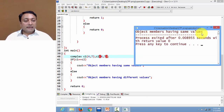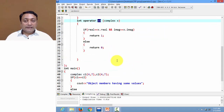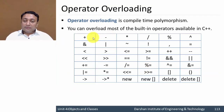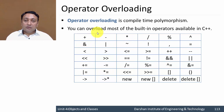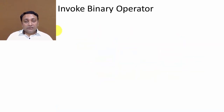If I make the values similar, it displays 'object members having same values'. This is how you can overload a binary operator. There are several operators you can overload — addition, subtraction, multiplication, division, and all the operators mentioned here. Operator overloading is also called compile-time polymorphism because it takes the decision at compilation time about what operation is to be performed.